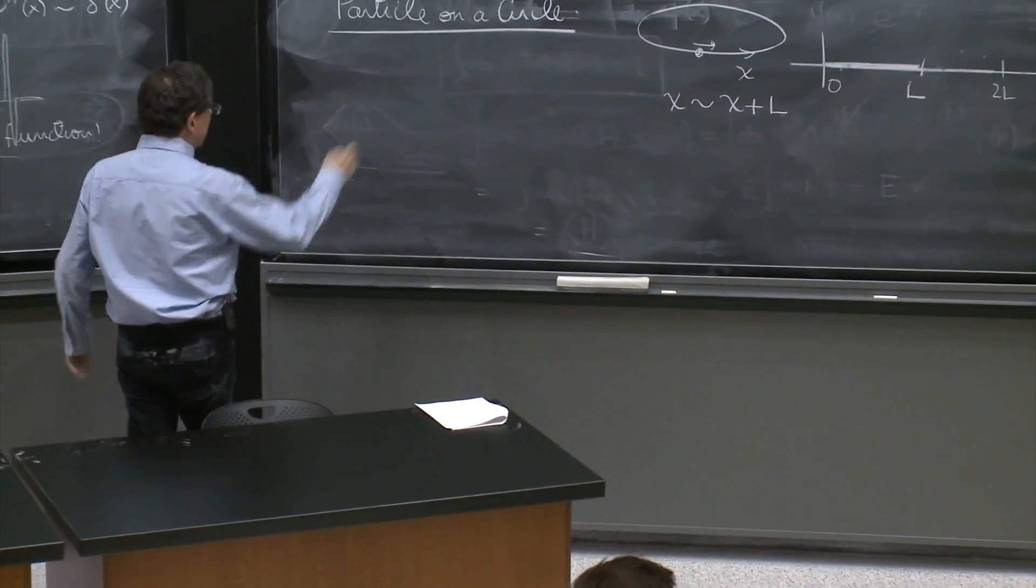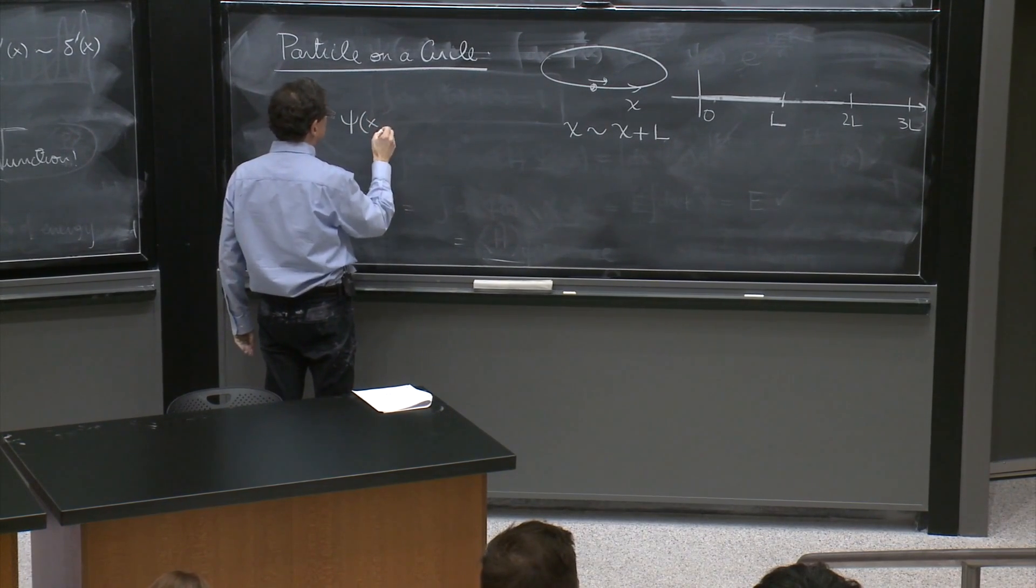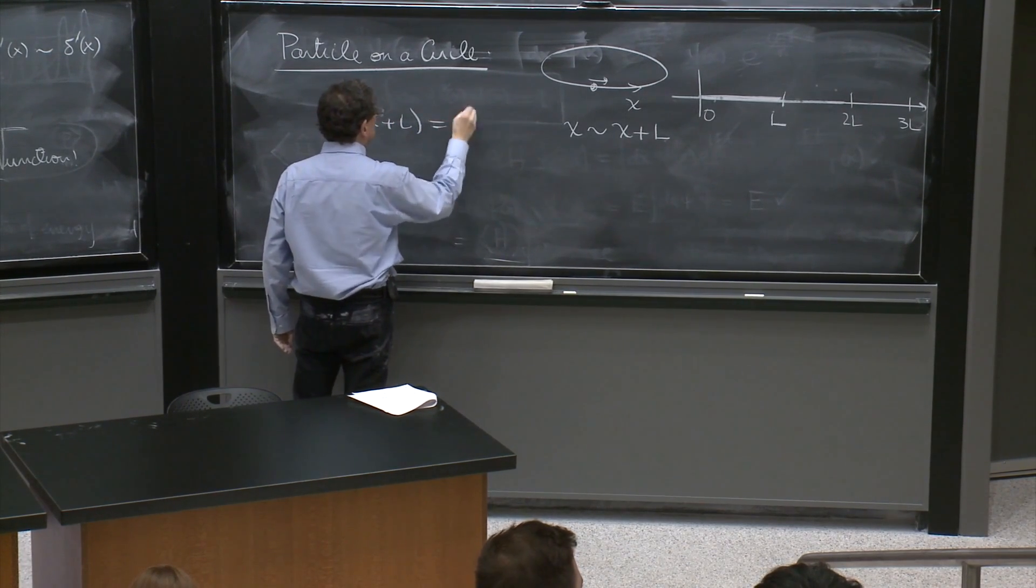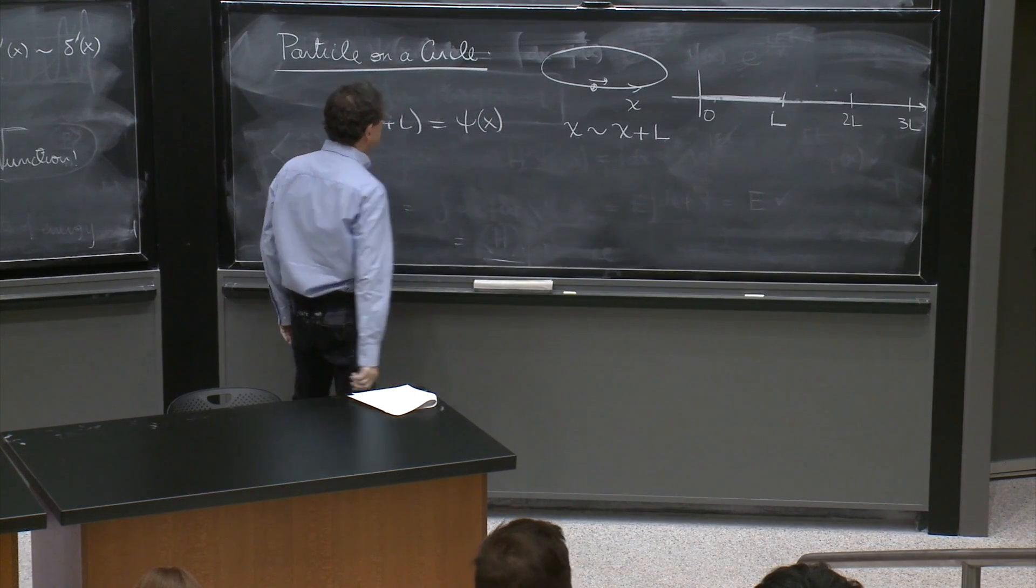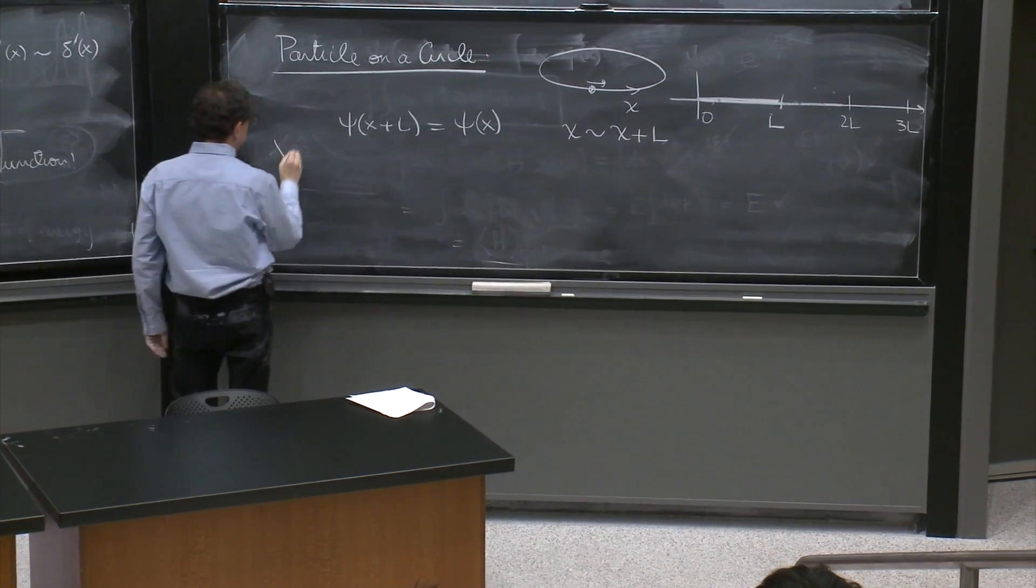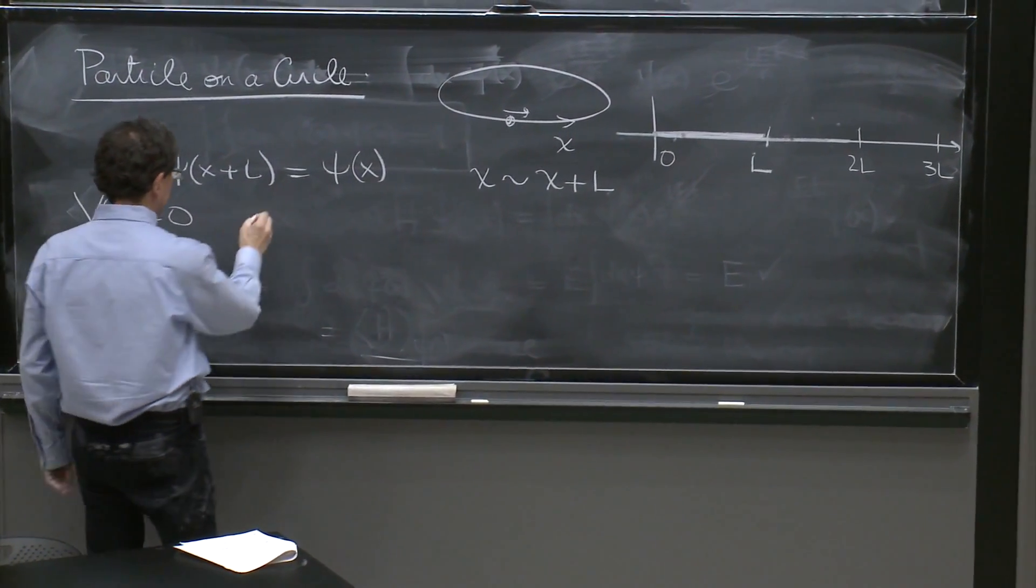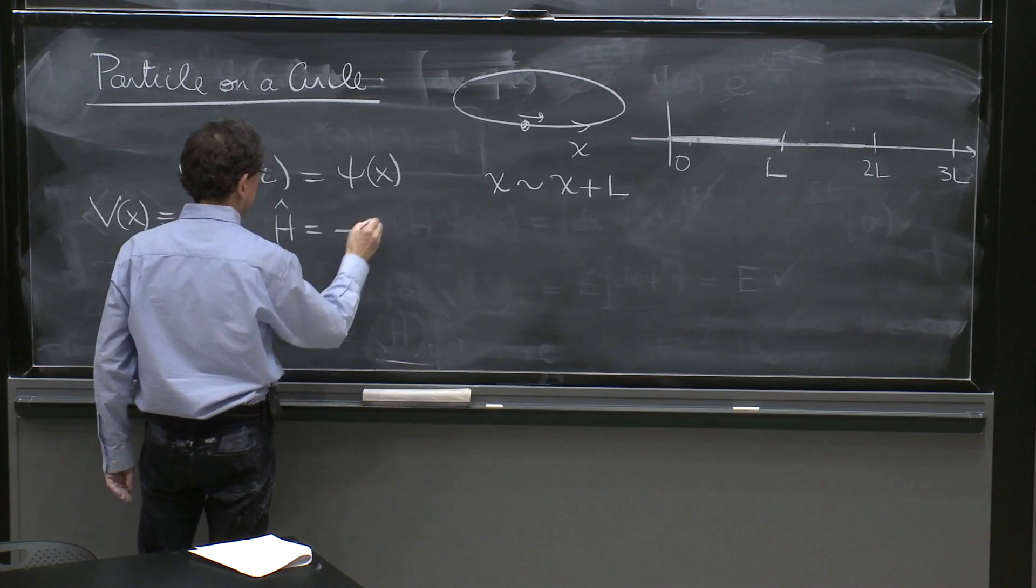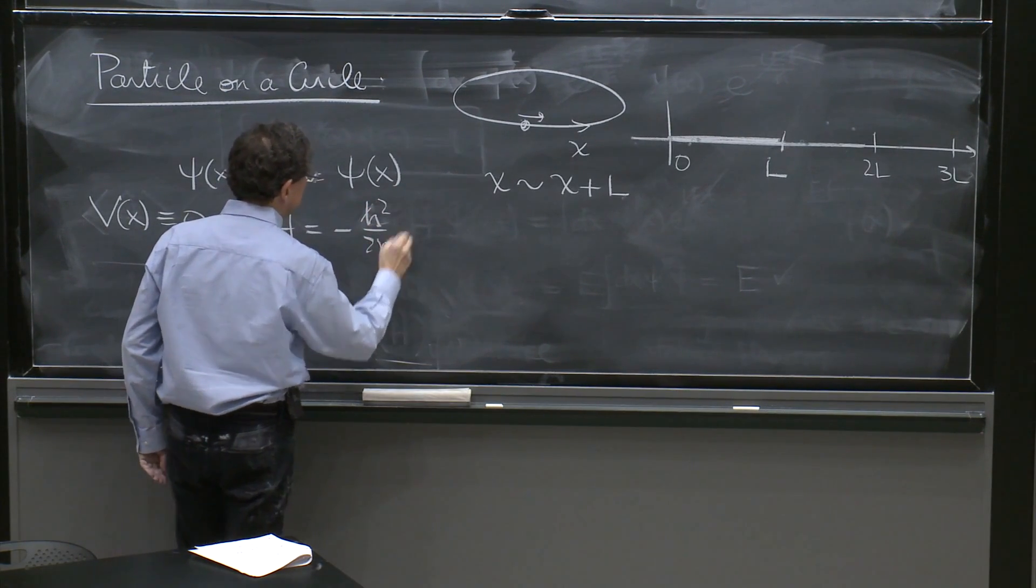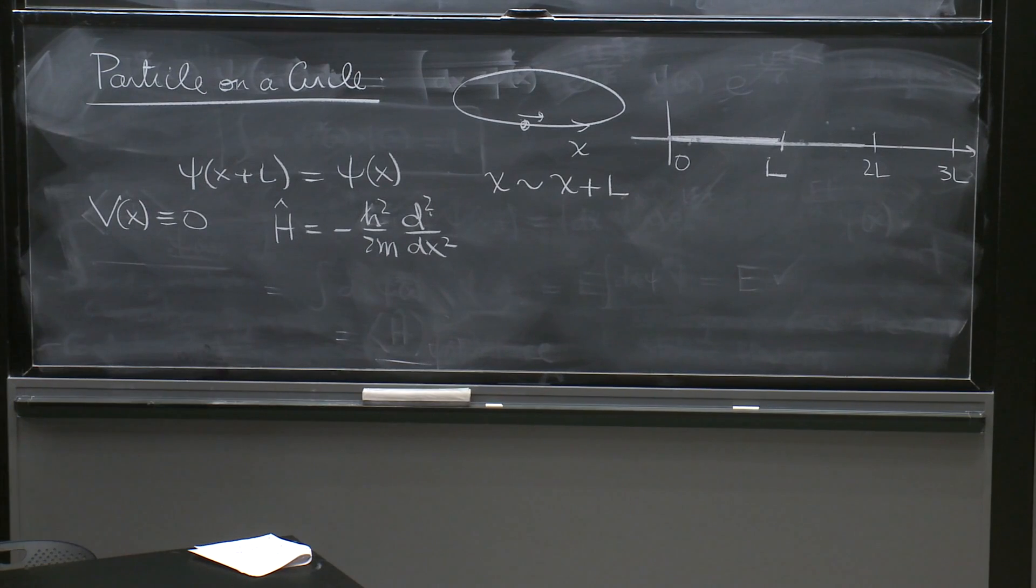So this implies that in order to solve wave functions on a circle, we'll have to put that ψ of x plus L is equal to ψ of x. These are the same points. And we'll have zero potential, V of x equals 0. We'll make life simple. So the Hamiltonian is just minus ℏ squared over 2m, d second dx squared.